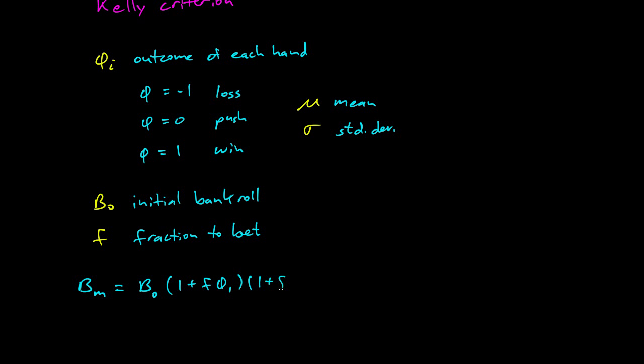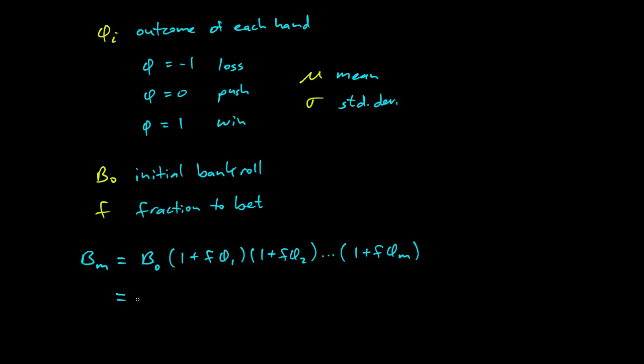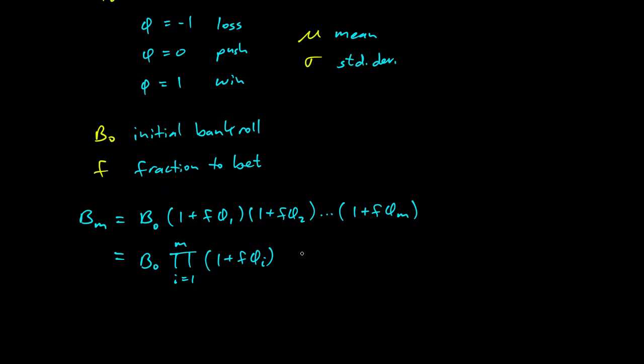Then after another hand, we get some result. And finally, we get up to the Mth hand. So here's the value of our bankroll after M hands have been dealt. And we can simplify this a little bit by saying it's the product of 1 plus f·φᵢ for i from 1 to M. So this π notation just means a product of a bunch of factors.